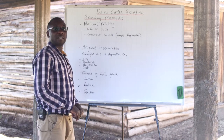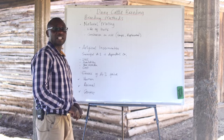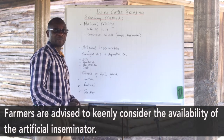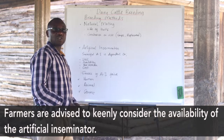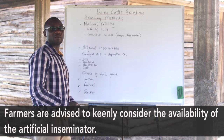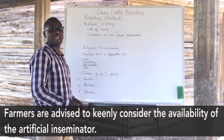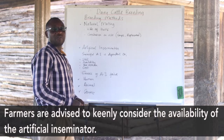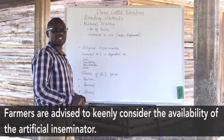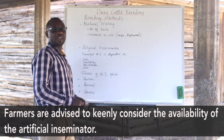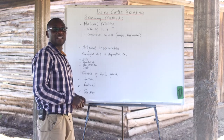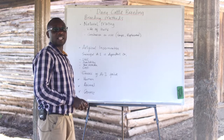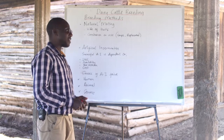Another major consideration for successful artificial insemination is availability. The services should be readily available for the animals to be served at the right time and to conceive at the expected time. Farmers need to make sure that semen is available from nearby vendors and should be prepared knowing which bulls they need to select.